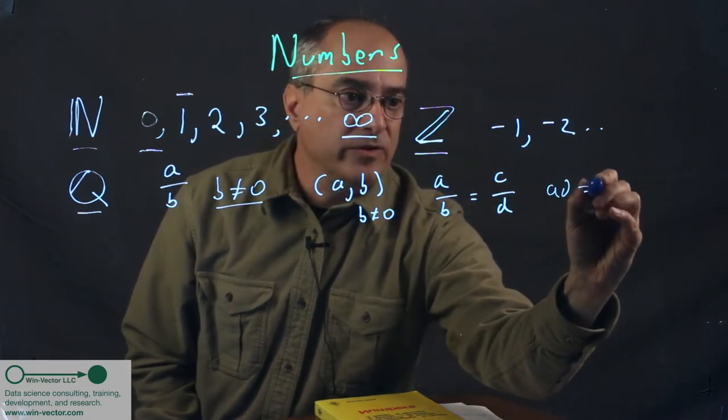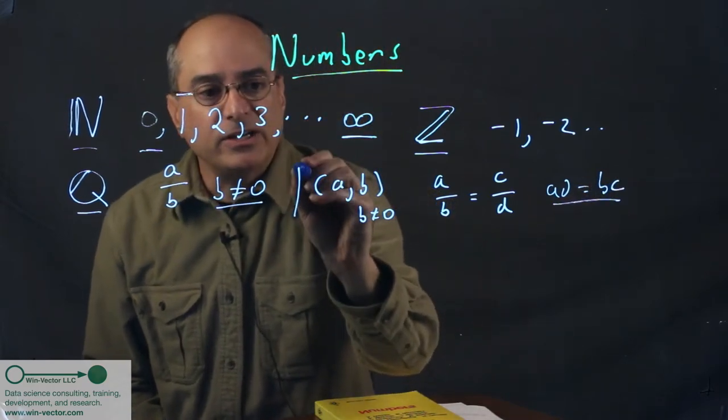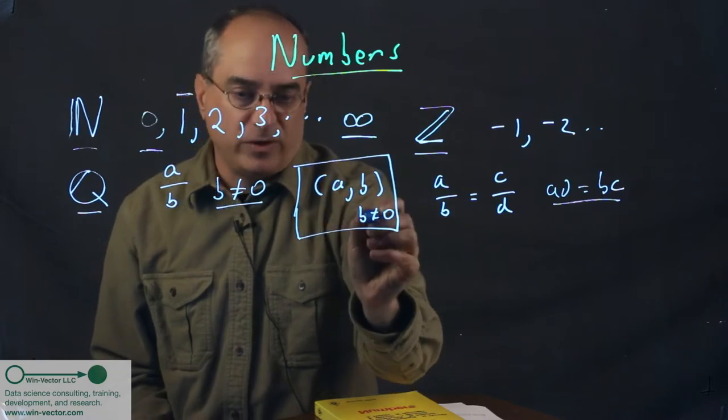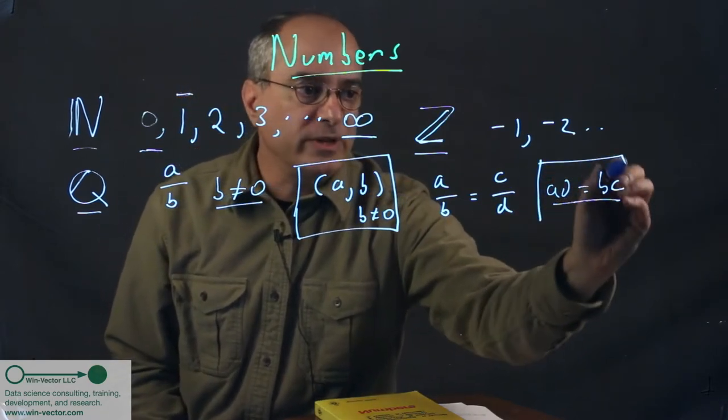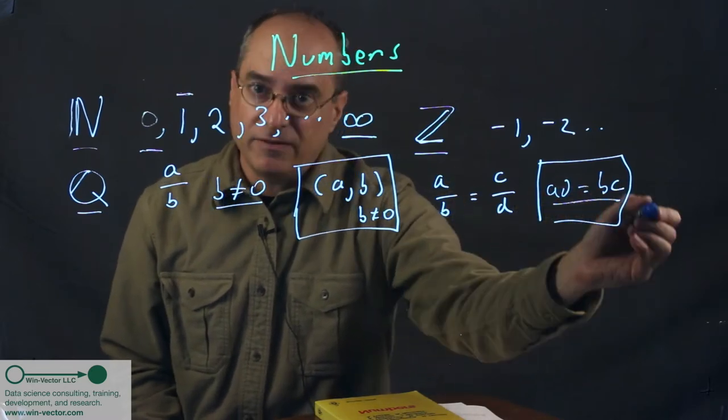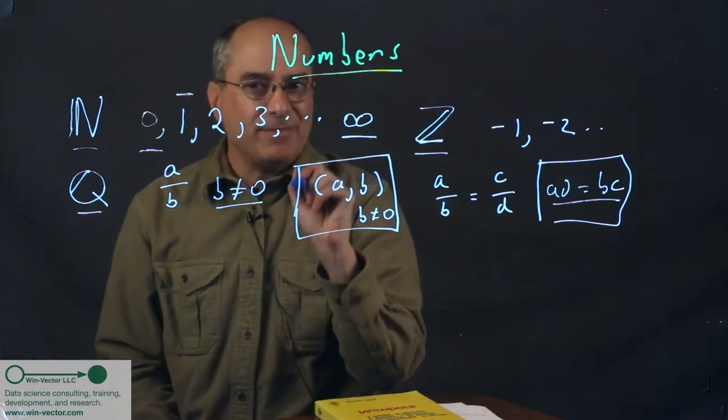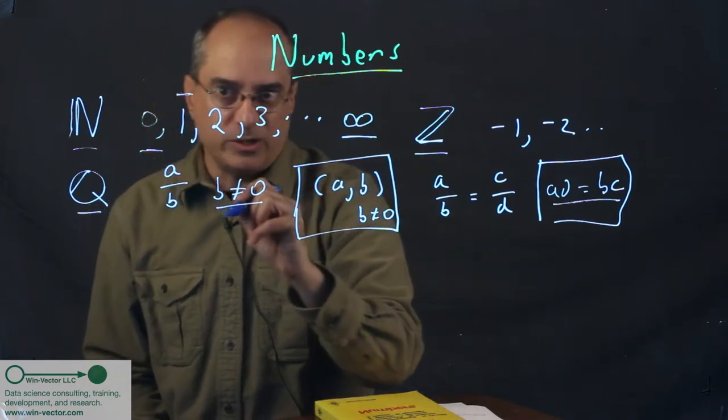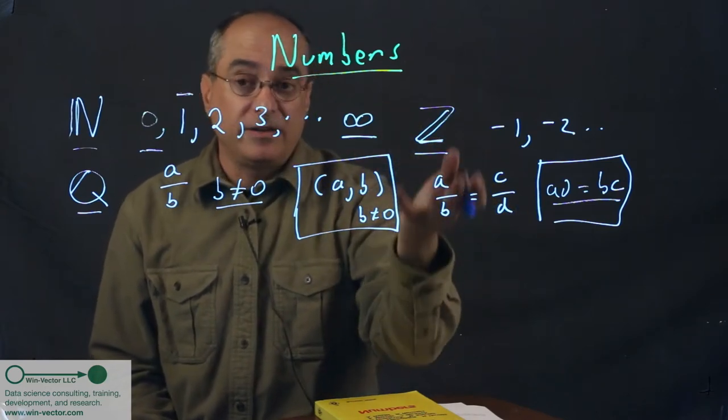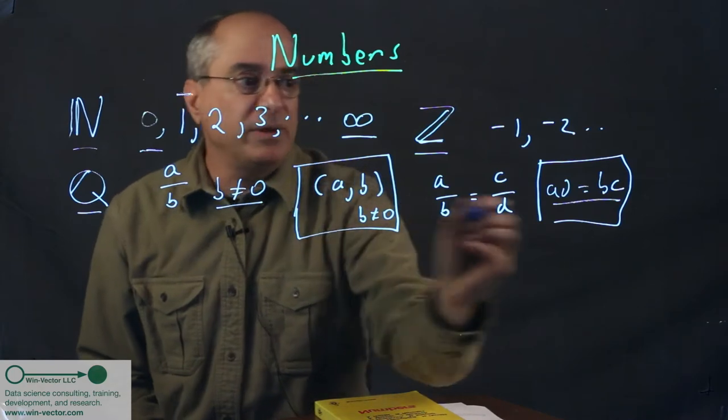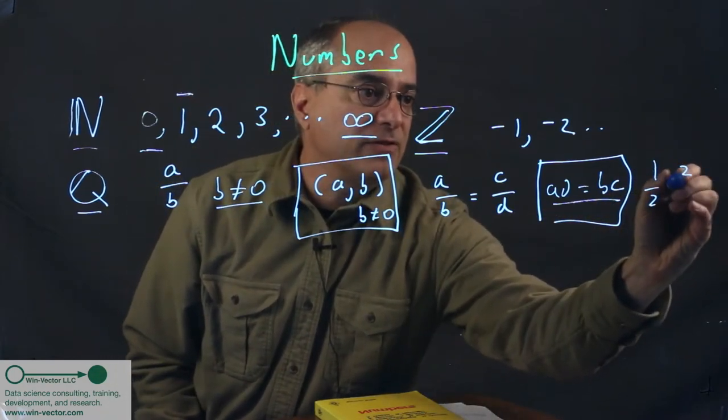So we get the rationals are actually pairs of integers, with this one restriction b is not zero, subject to an equivalence relation that two of these pairs are considered identical if this check equation holds. So already, we're playing our favorite mathematical trick of moving to equivalence classes, which is somewhat difficult for the beginner. Equivalence classes is a great technique, but it makes things complicated. So basically, that's a very long-winded way of saying the fraction one-half is the same as the fraction two-fourths.